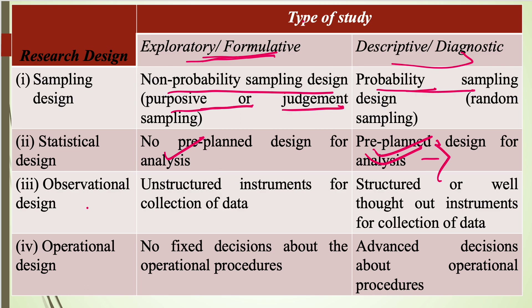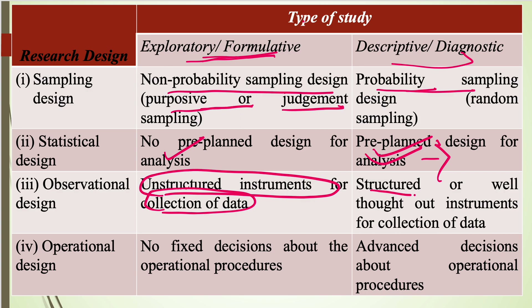If we check about the observational design, there is no particular fixed parameter or structured instrument for data collection in exploratory type of research design. Whereas in the case of descriptive research design, structured or well-thought-out instruments are used for data collection — for example, questionnaires which should be well-structured, or structured interviews.